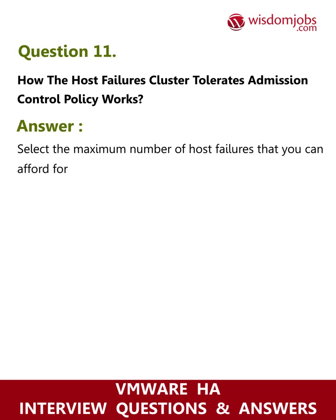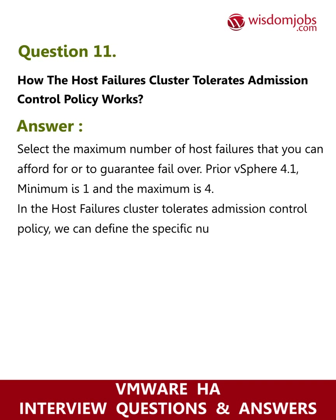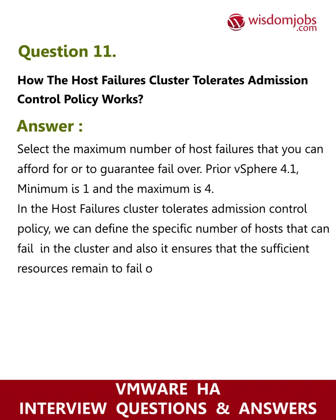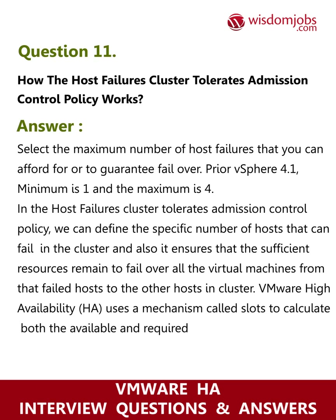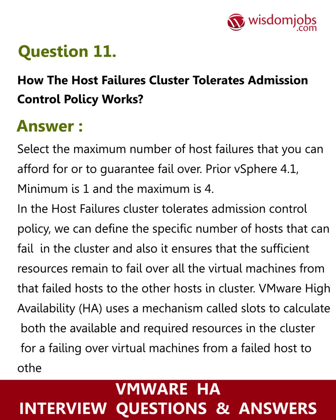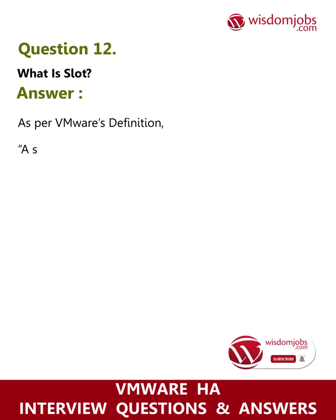Question 11: How does the host failures cluster tolerates admission control policy work? Answer: You select the maximum number of host failures you can afford. Prior to vSphere 4.1, the minimum is one and the maximum is four. This policy defines the specific number of hosts that can fail in the cluster and ensures sufficient resources remain to fail over all virtual machines from the failed hosts to other hosts. VMware HA uses a mechanism called slots to calculate available and required resources for failing over virtual machines.